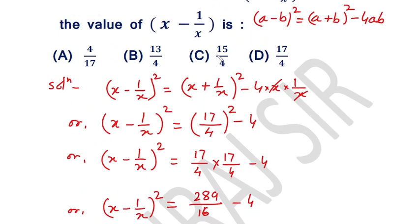Hence, our answer is option C, that is 15 over 4.